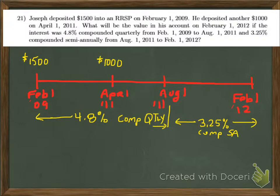The question asks: what is the value of his account on February 1, 2012? In other words, how much is the account going to be worth on that date at the very end of the timeline?